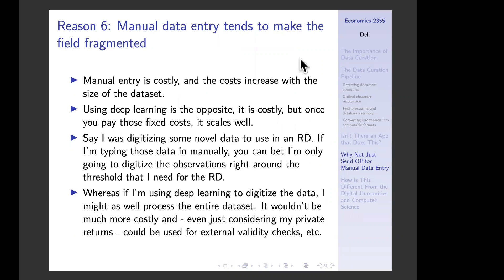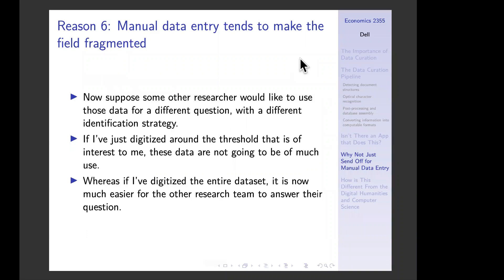Manual data entry also tends to make the field fragmented. It's costly, and costs increase with the size of the dataset, whereas deep learning is the opposite — it has high fixed costs but scales well once you pay those. If I'm manually digitizing data for an RD, I'm only going to digitize observations right around the threshold I need. But if I'm using deep learning, I might as well process the entire dataset — not much more costly, and could be used for external validity. Moreover, if another researcher wants to use those data for a different question with a different identification strategy, a fully digitized dataset is far more useful to them. There are big externalities to that.